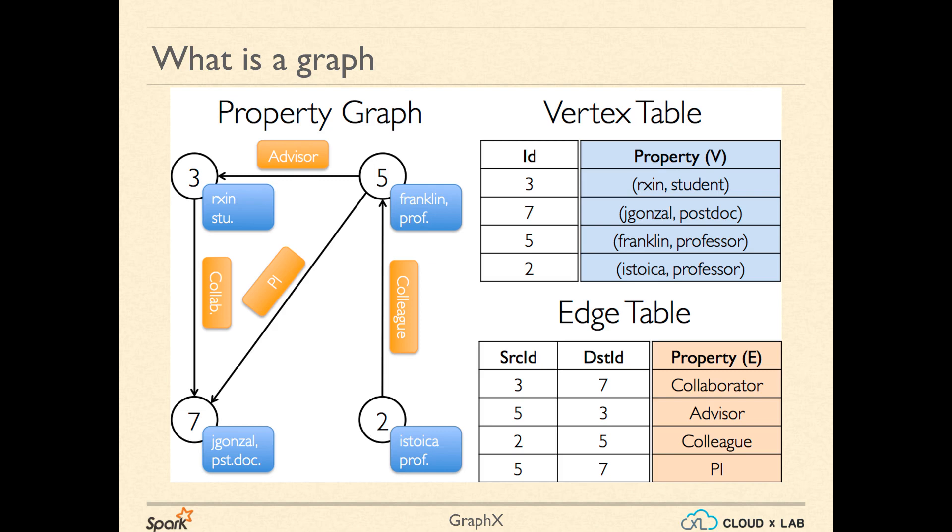The edges represent the relationships between these people. For example, student marked with 3 as ID is a collaborator of 7 postdoctoral candidate. Similarly, 5 Franklin is the advisor of 3 student. The graph is defined by 2 tables: vertex table and edge table.